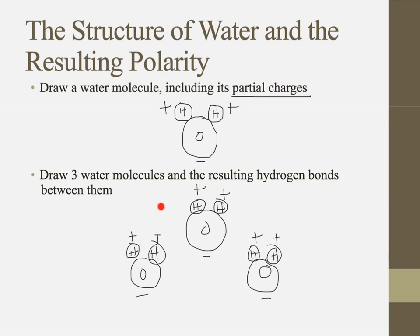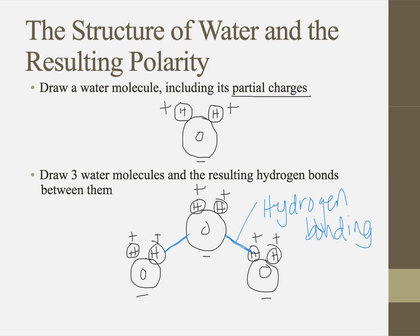When I get more than one molecule that is polar — meaning it has positive and negative charges — when I get more than one of those polar molecules together in an area, I can get what's called hydrogen bonding. Hydrogen bonding is an attraction between the negative end of one molecule and the positive end of a different molecule.